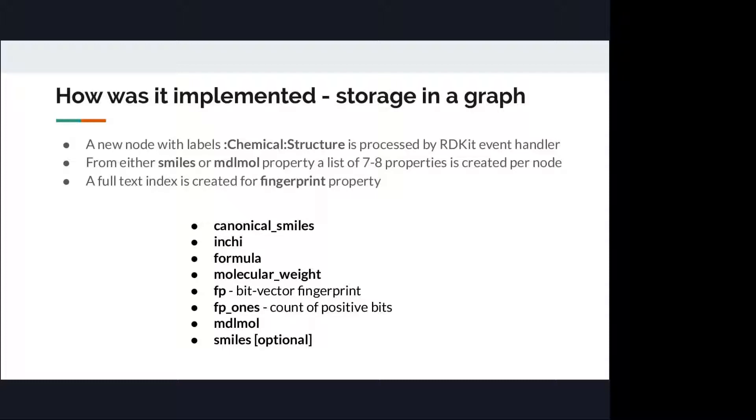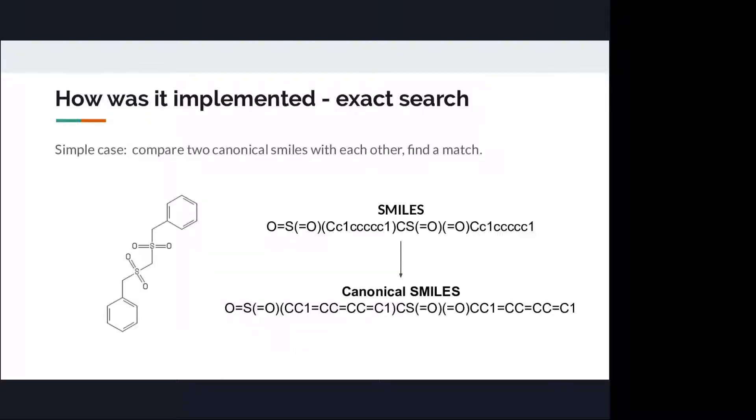How it was implemented? Storage in a graph. Whenever a chemist adds a new node with labels chemical structure, an RDKit event handler catches it and adds a list of new properties. The most important are canonical smiles, fingerprint, which is fp, and mdlmol.